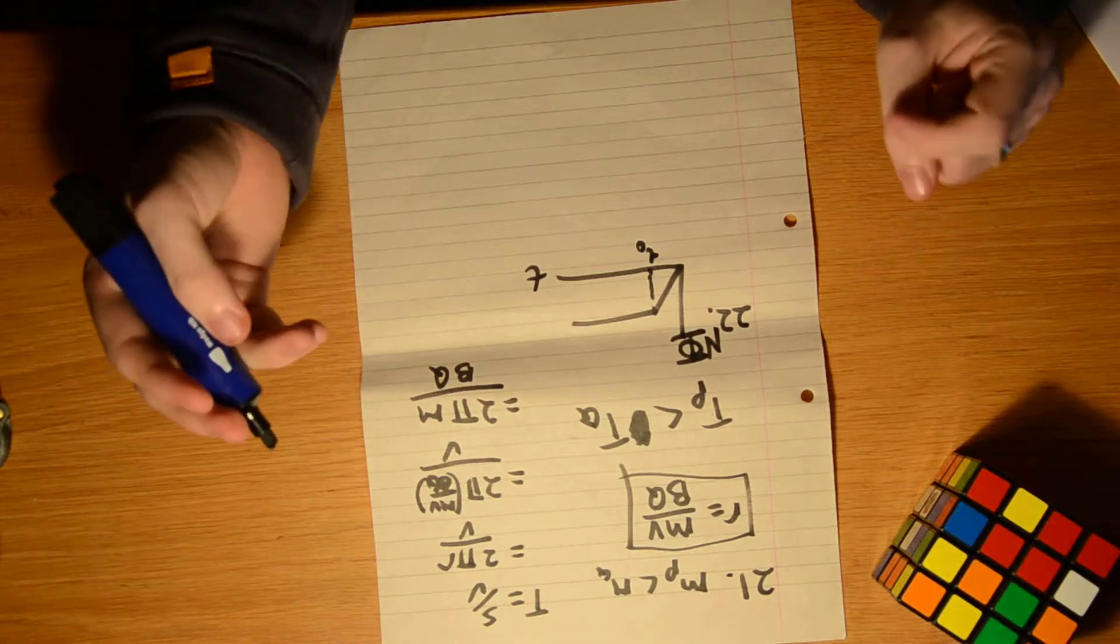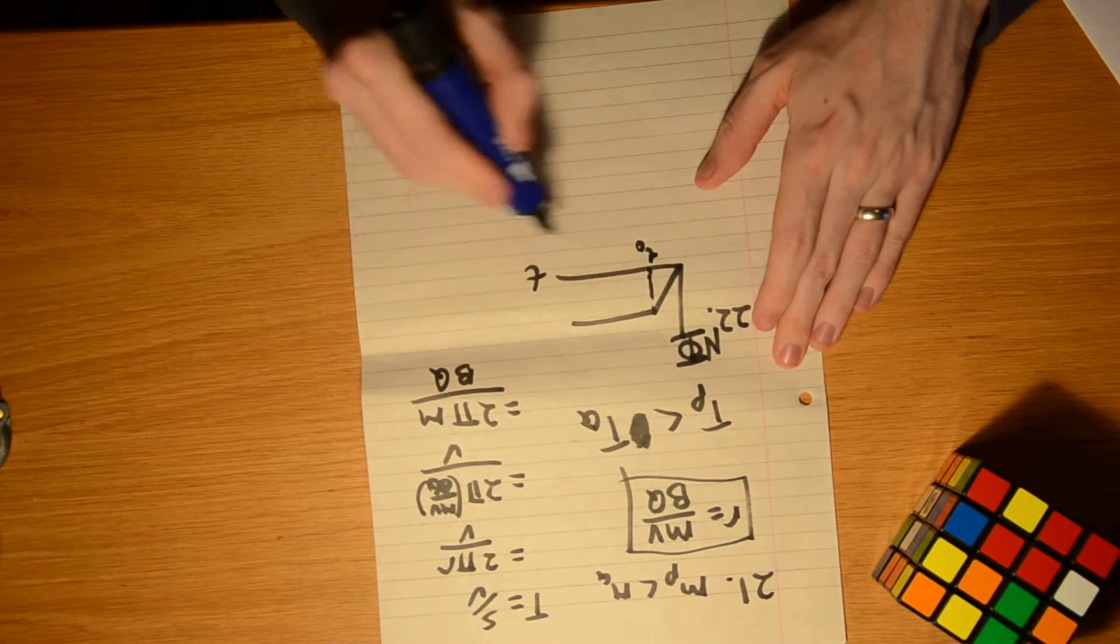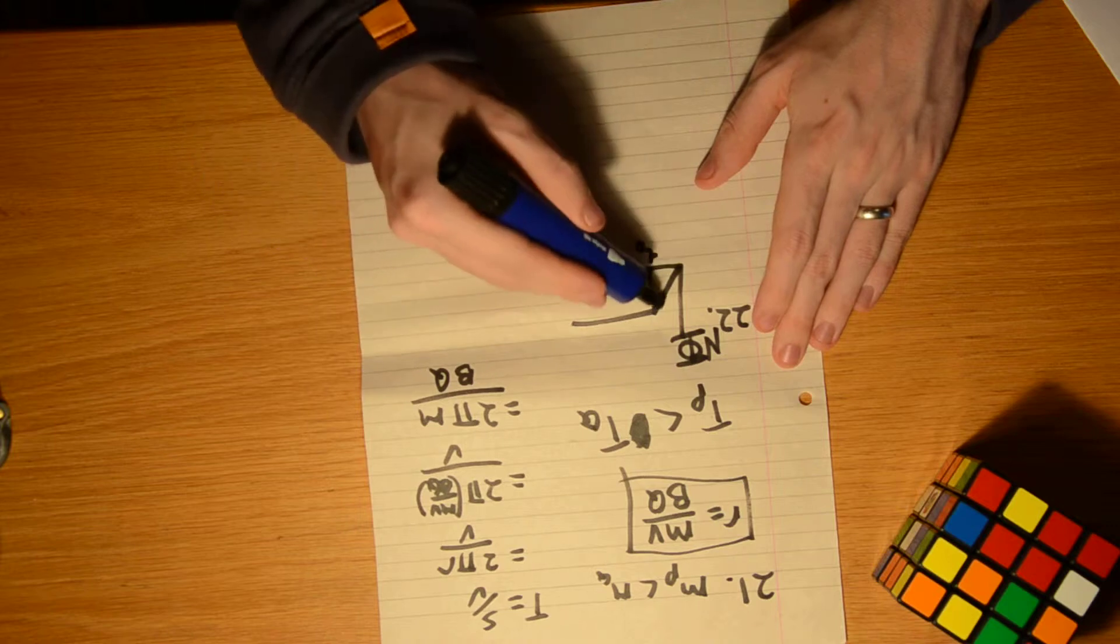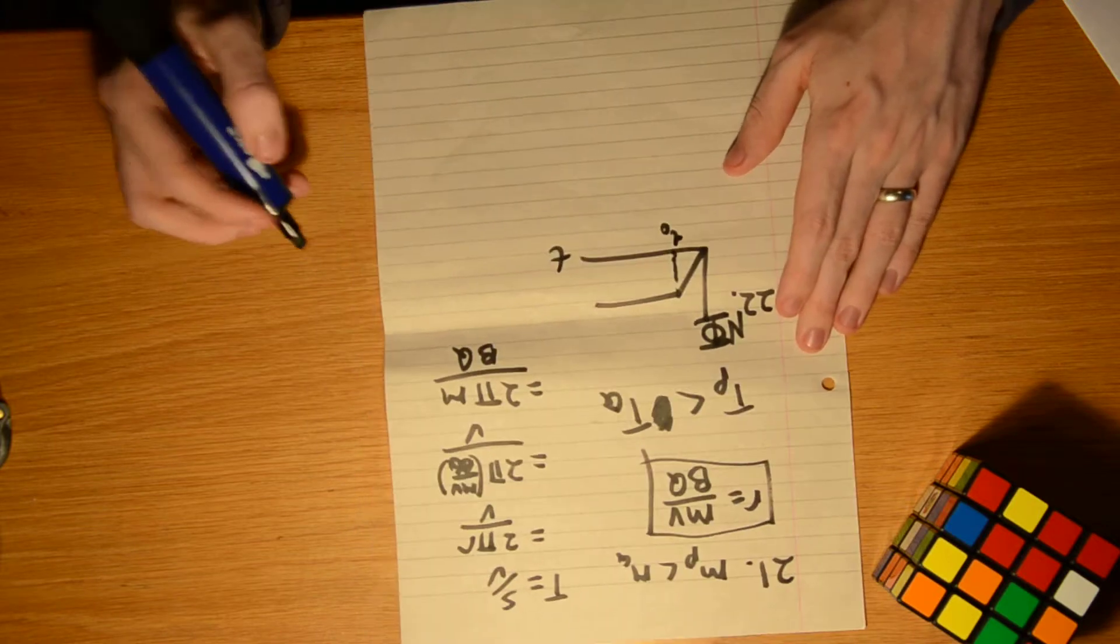So basically the question is how does the EMF change as time goes on. We have this straight line here and then we have this completely horizontal line.